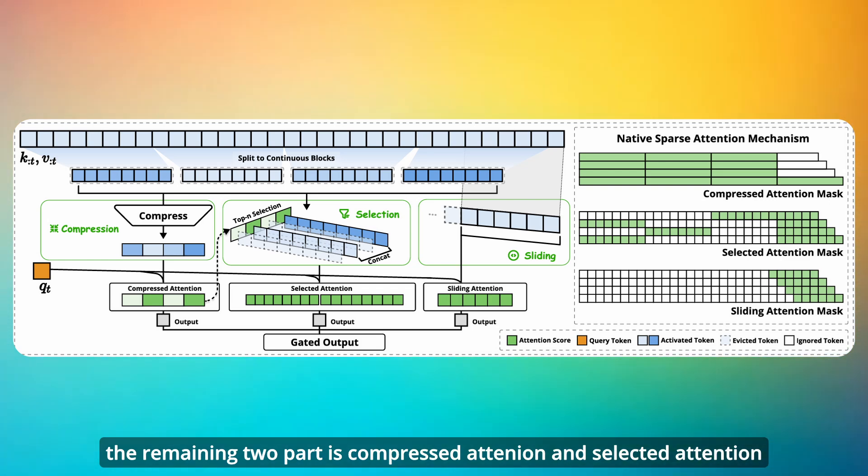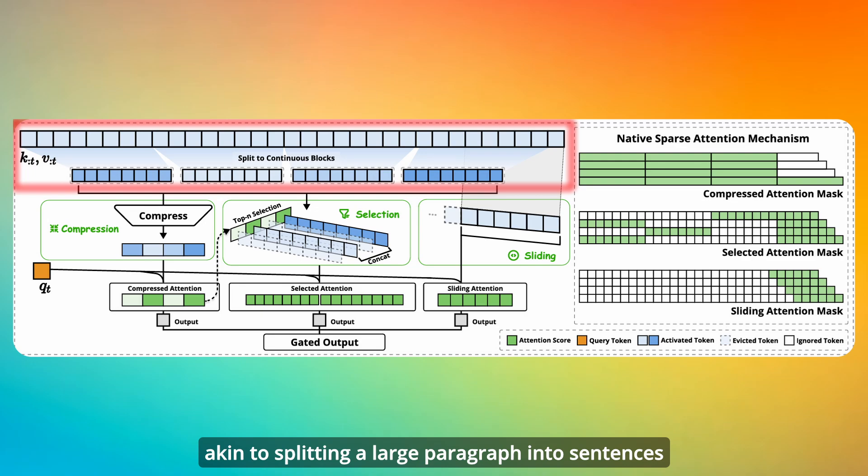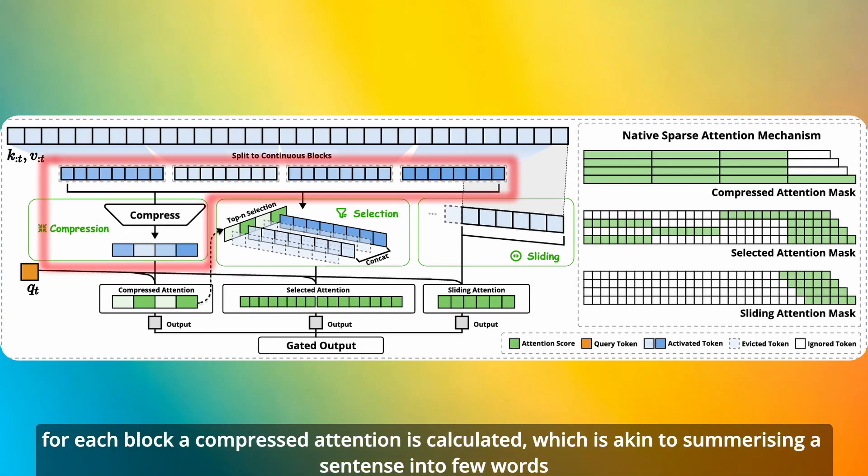The remaining two parts are compressed attention and selected attention. To get the compressed and selected attention, the context is broken down into blocks, akin to splitting a large paragraph into sentences. For each block, a compressed attention is calculated, which is akin to summarizing a sentence into a few words.